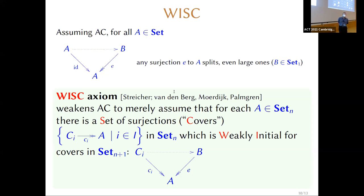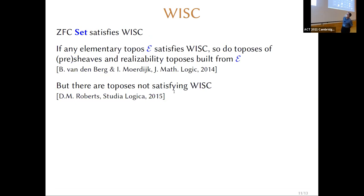When you first see WISC it's not immediately apparent why that's any much less of an ask than the axiom of choice. It's certainly some sort of choice principle. ZFC satisfies WISC rather trivially — the single family with the identity in it will be a weakly initial set of covers for A. But the interesting thing is that, as van den Berg and Moerdijk showed, if you've got a topos that satisfies WISC, then taking internal presheaves, or forming a sheaf topos over it, or a realizability topos built out of it, will still satisfy WISC.